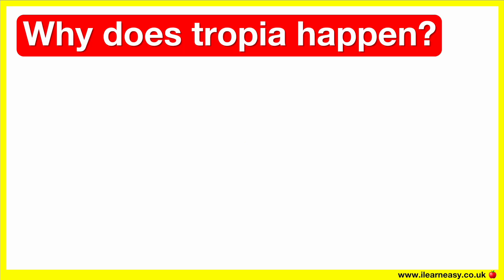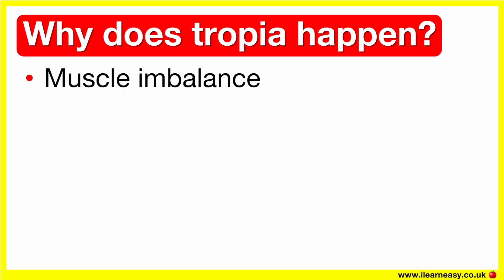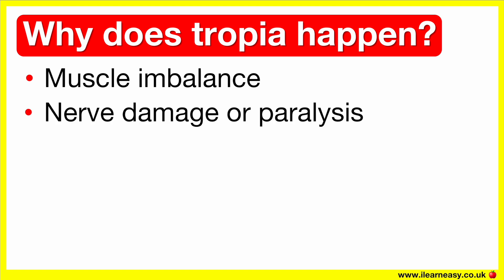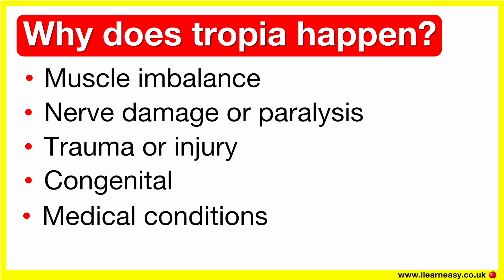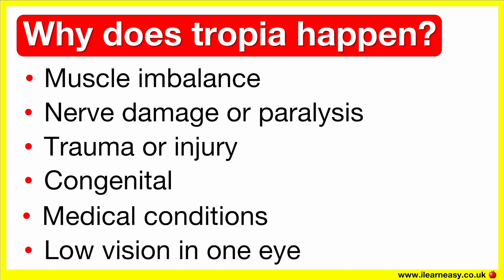So why does a tropia happen? This is usually due to a muscle imbalance controlling the eye movement, nerve damage or paralysis, trauma or an injury. It can be congenital, so present at birth, or a medical condition that affects the eye muscles or nerves. Another common reason for misaligned eyes is low vision in one of the eyes, which can cause a lack of binocular coordination.